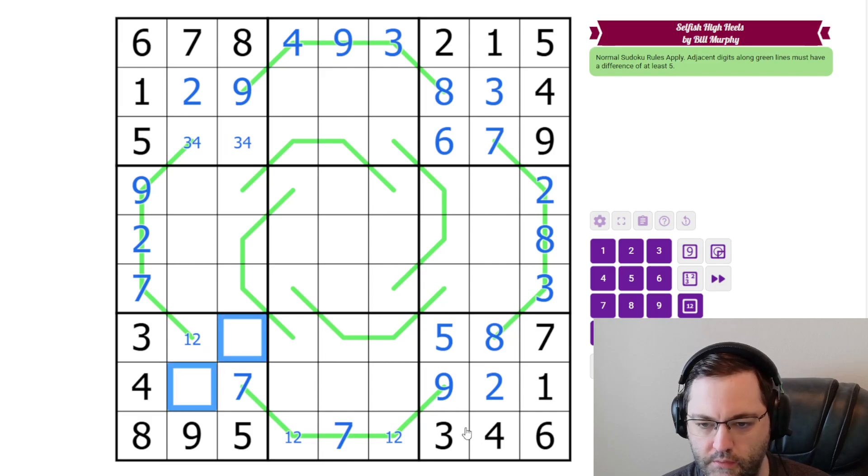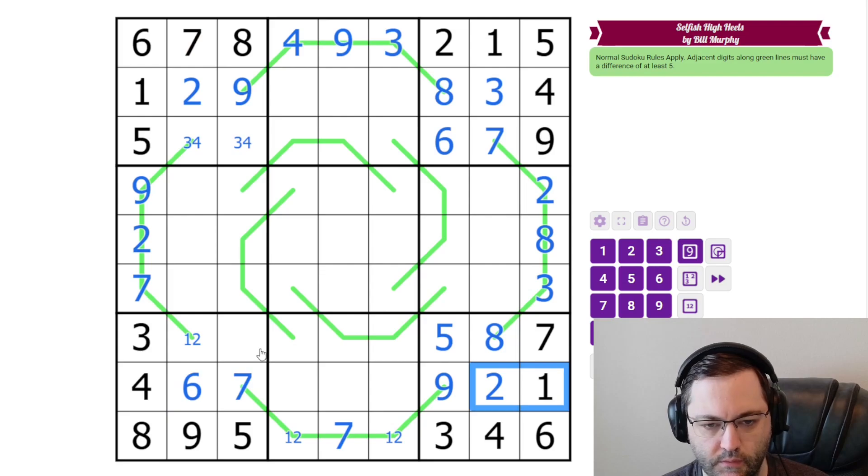These are one, two, and six. And this must be the six because of the one, two there. Five, six, seven here. And the two here resolves that.